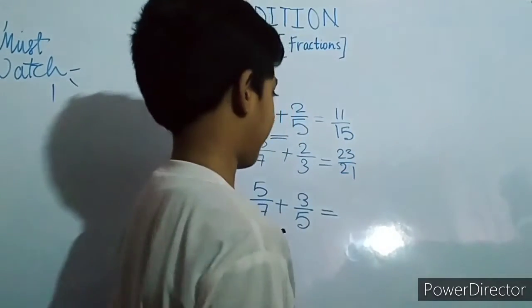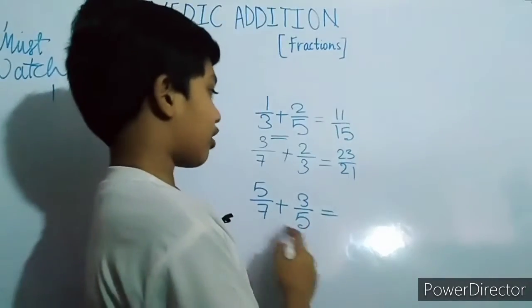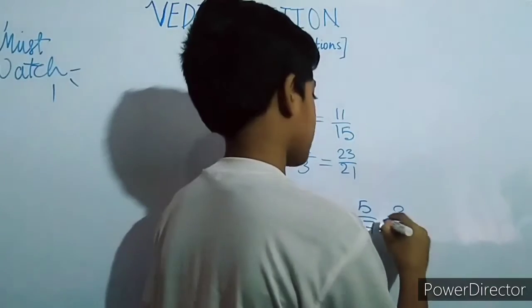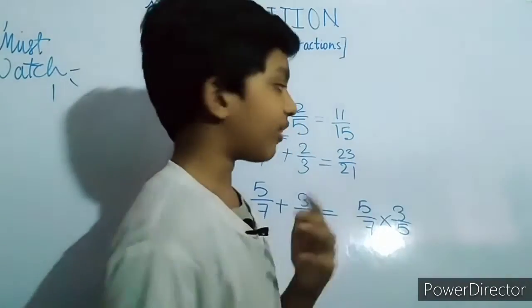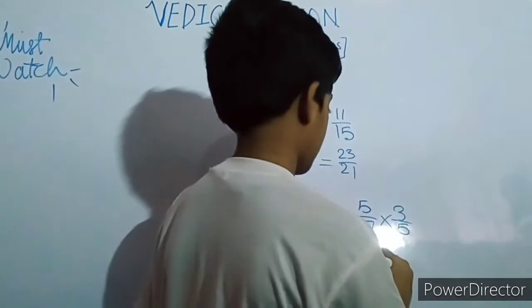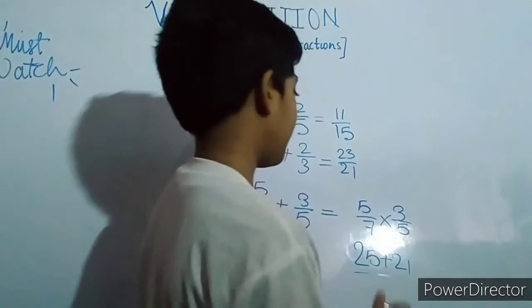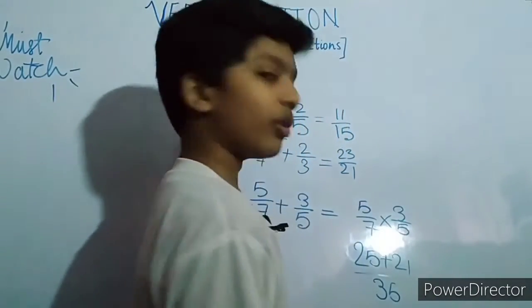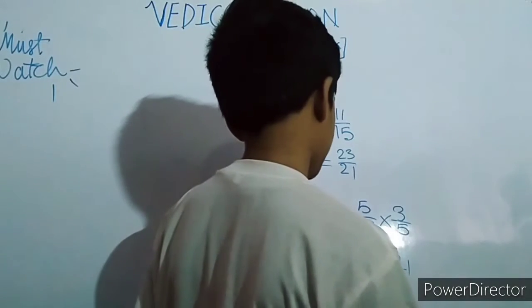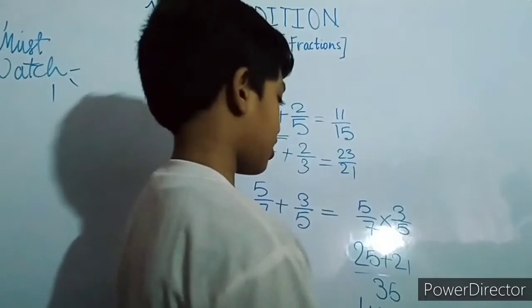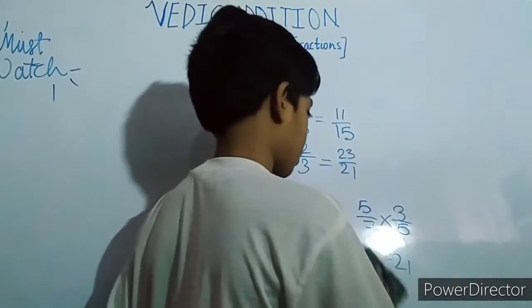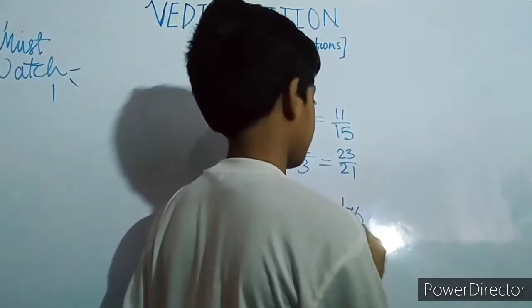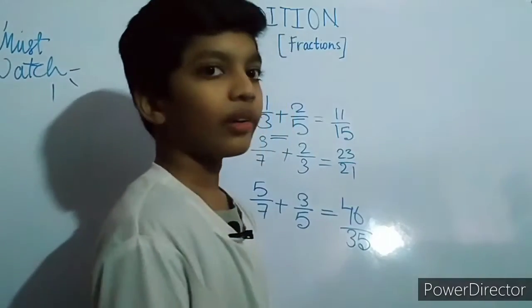Now five by seven plus three by five. Just cross multiply: five into five is twenty five, and three into seven is twenty one. Twenty five plus twenty one by — for the denominator multiply seven into five which is twenty five. So the answer will be forty six by twenty five.